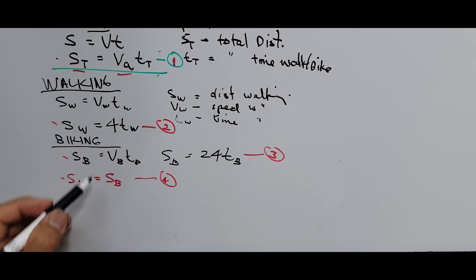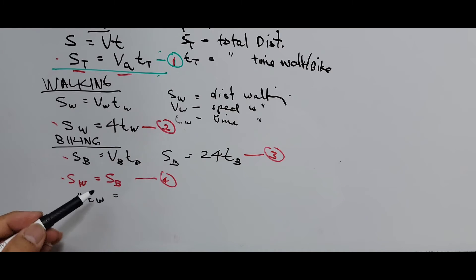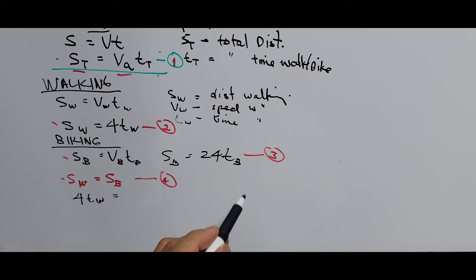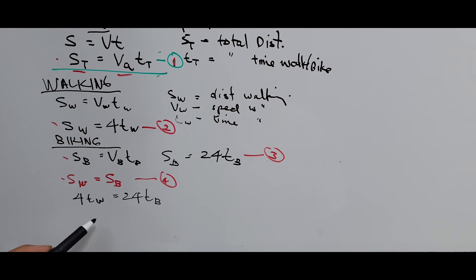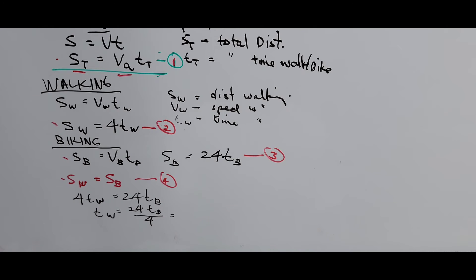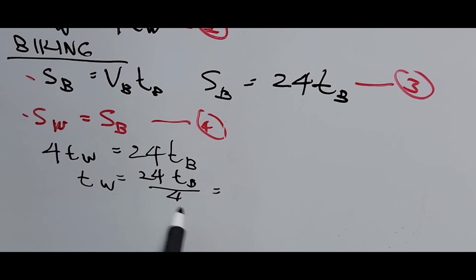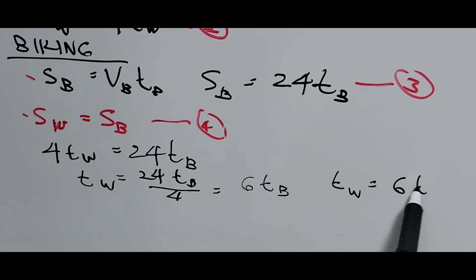Substituting into equation 4: distance walking is 4 times T_W, and distance biking is 24 times T_B. So 4 times T_W equals 24 times T_B. Solving for T_W: T_W equals 24 times T_B divided by 4, which simplifies to T_W equals 6 times T_B.